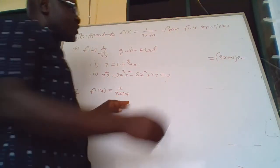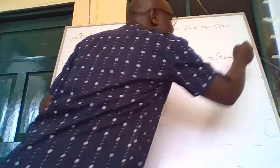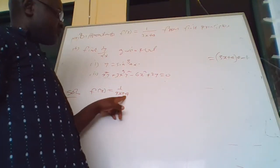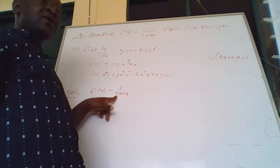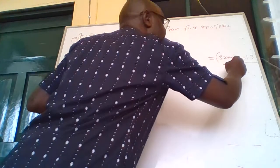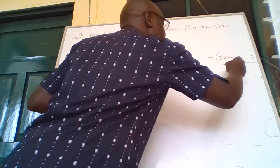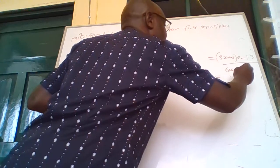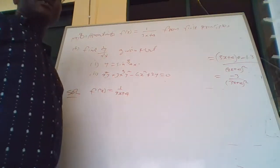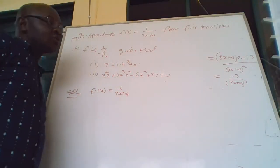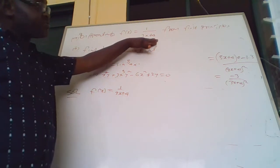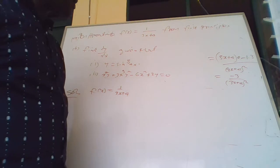Minus, we put down the top which is 1, and differentiate the bottom with respect to x. 4 is a constant so it gives 0, then we have 3. Then we have the bottom squared. So the answer is negative 3 over 3x plus 4 squared. When we differentiate from first principle, we must be able to get the same result.